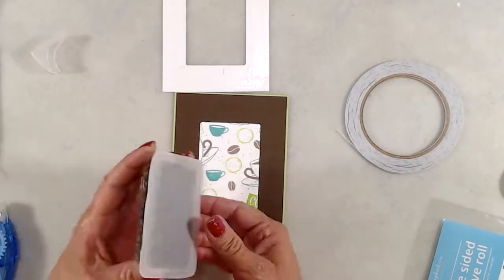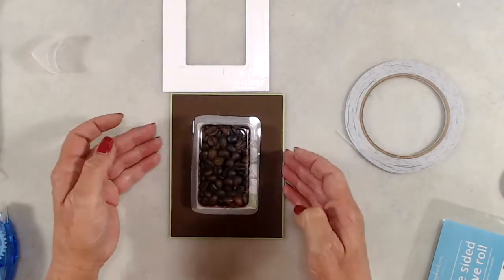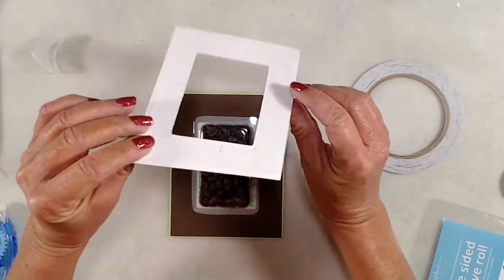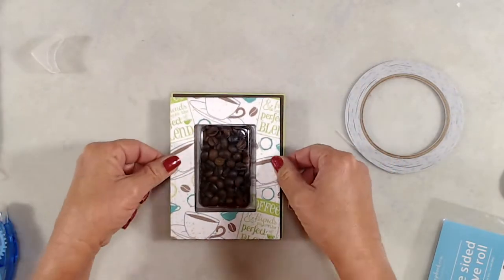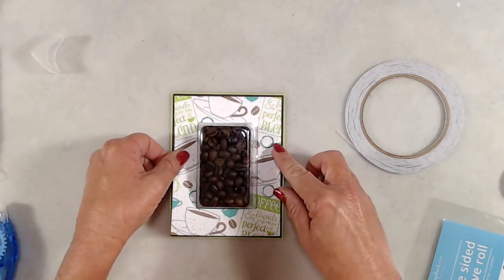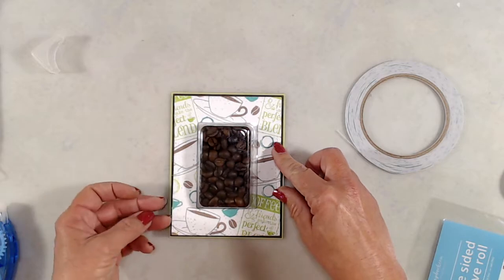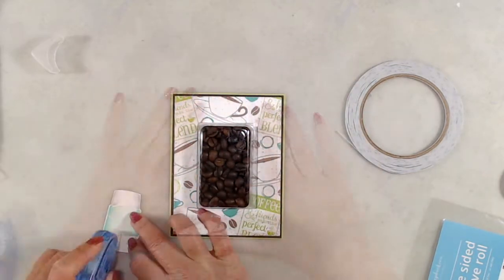Once I had the adhesive on that frame, I placed my bobble bubble over the centerpiece on the card front itself and then adhered my stamped panel in place.